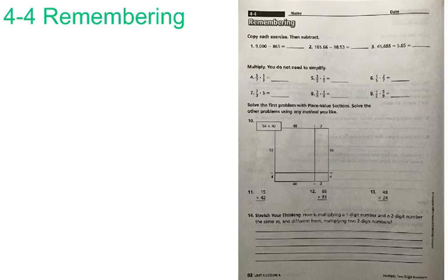Good morning class. Today we are working on unit 4 lesson 4 remembering. Today we are reviewing adding and subtracting numbers and decimals. We are reviewing multiplying fractions and fractions by whole numbers. You are also looking at place value sections and reviewing that. Multiplying two digit by two digit numbers and you can go ahead and put an X through stretch your thinking. We will go ahead and look at numbers 1 through 3.